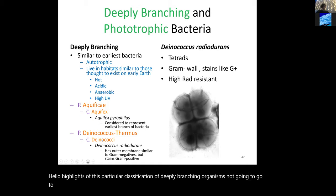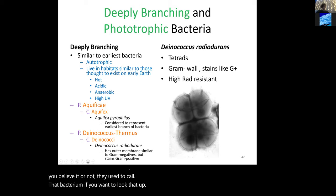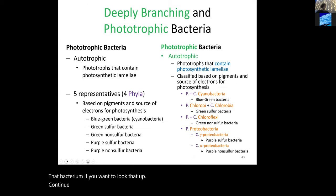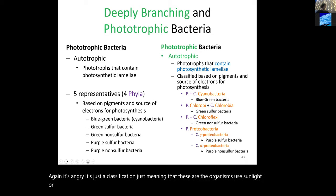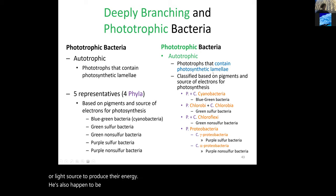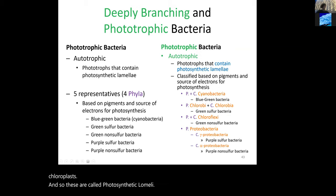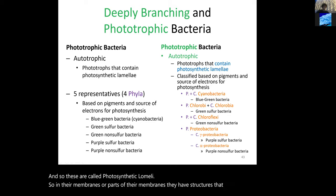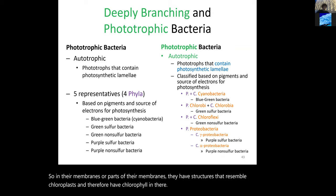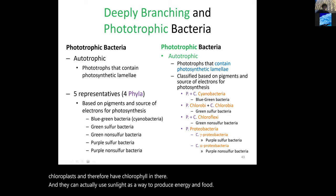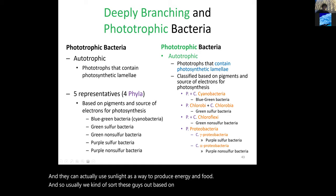Next is the phototrophic bacteria classification — also in green, just a classification. These organisms use sunlight to produce energy and are autotrophic. What's unique is they possess early versions of what chloroplasts used to be. These are called photosynthetic lamellae — structures in their membranes resembling chloroplasts with chlorophyll, allowing them to use sunlight to produce energy and food. We sort them based on the colors they reflect.